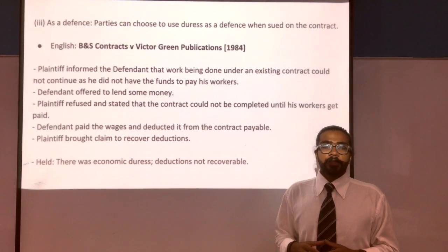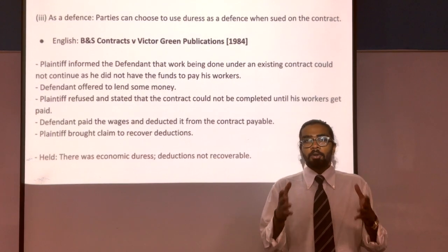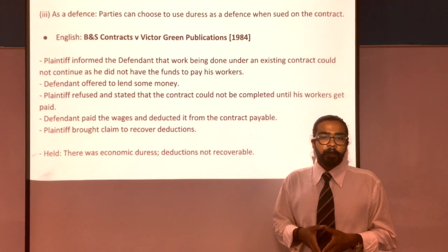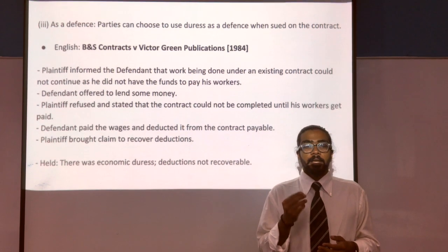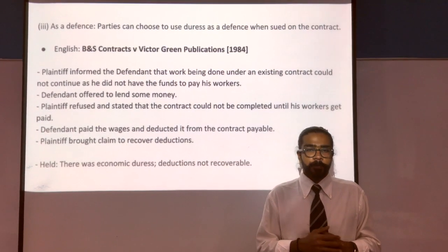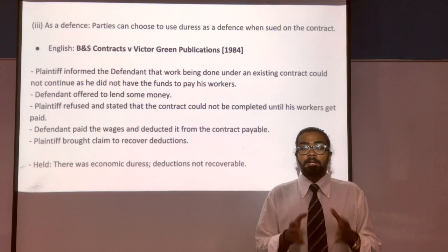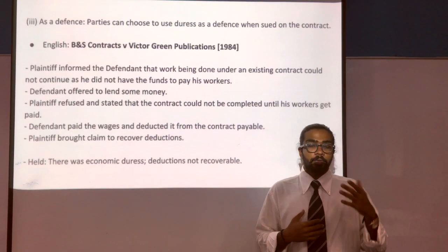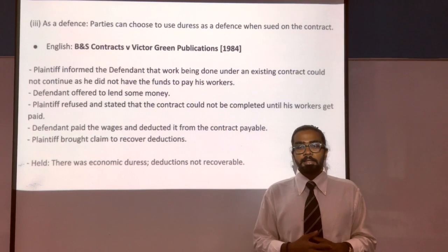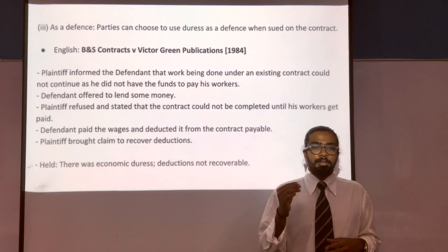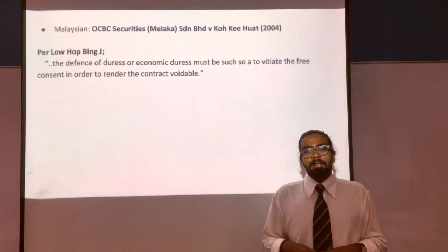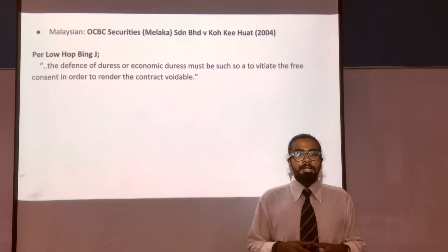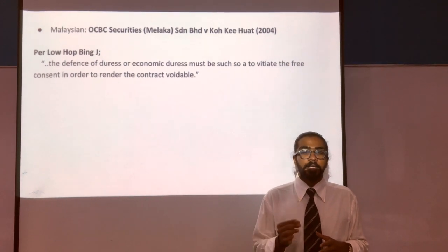The third and final remedy available in both systems is duress as a defence. The innocent party can opt not to take any action and rely on the defence of duress if litigation arises. In BNS Contracts v Victor Green Publications, the claimant threatened not to fulfil the contract unless workers were paid; the defendant paid the wages and deducted them from the contract sum. The court recognised there was no practical alternative for the defendant and economic duress was present, so the deductions were not recoverable. Similarly, in OCBC Securities v Kho Ki Khoat, Justice Lo Hock Bing stated that the defence of duress or economic duress must be such as to negate free consent in order to render the contract void.